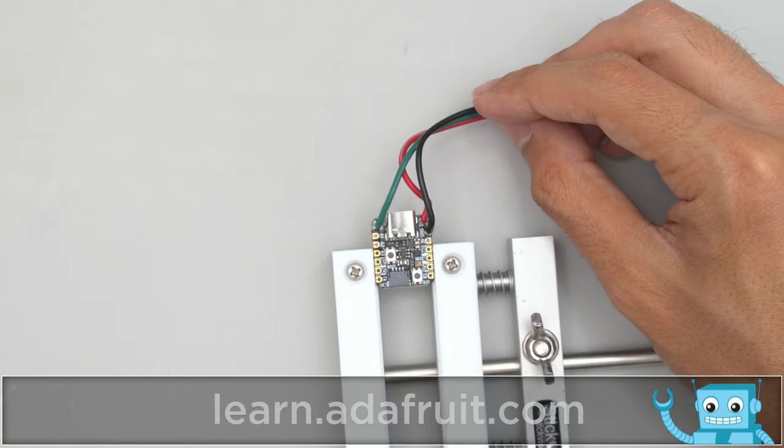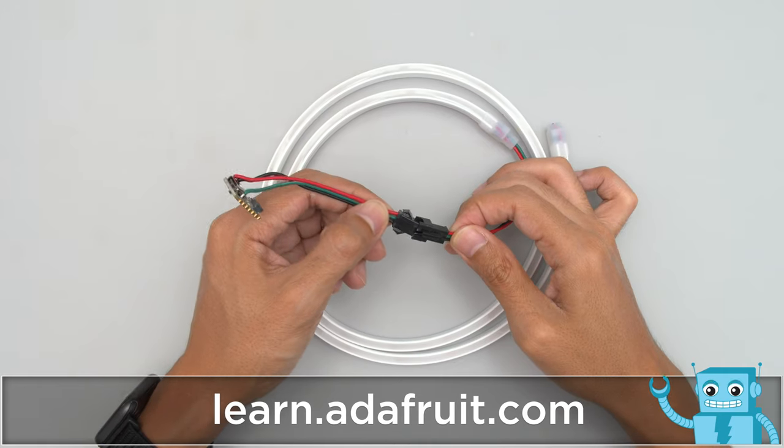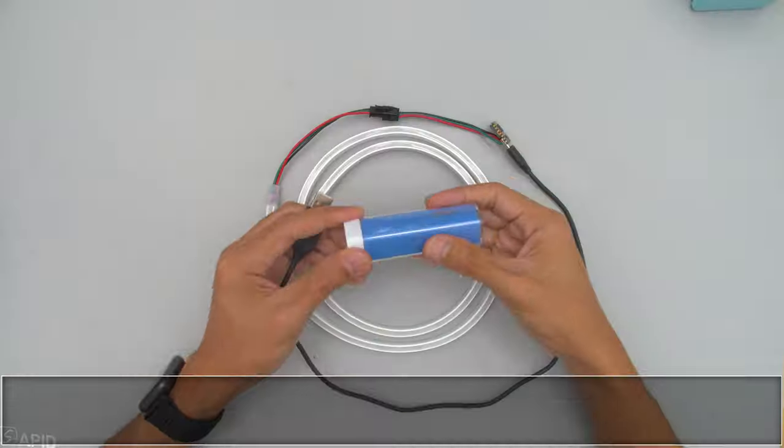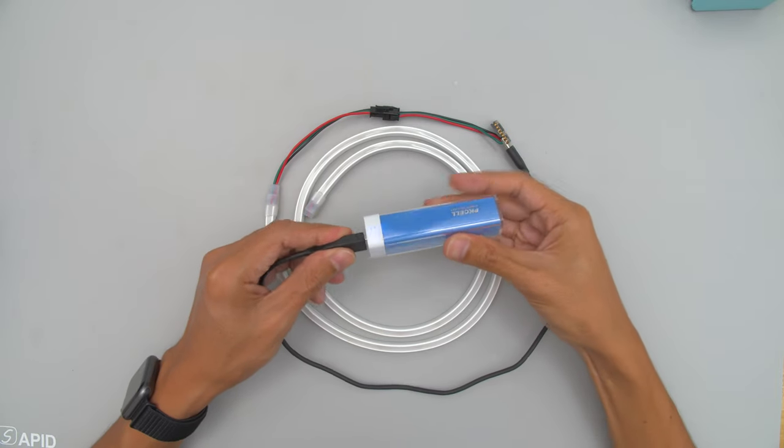Be sure to check out the guide on the Adafruit learning system for a full step-by-step tutorial on building this project. Now we can easily connect the NeoPixel strip to the CutiePie and power it off a 5V USB battery or power supply.